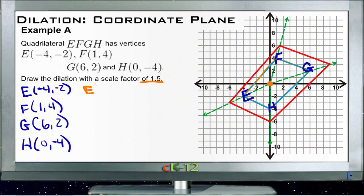So for E prime, or our new E location, we'd have negative four times one and a half and negative two times one and a half, so we'd end up with negative six, negative three. So our new coordinate that represents E then goes back six and down three and ends up right here at this vertice on the red quadrilateral.